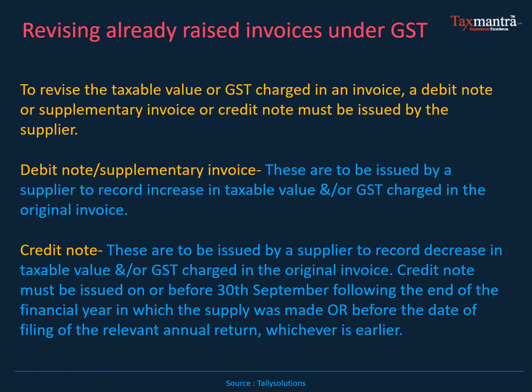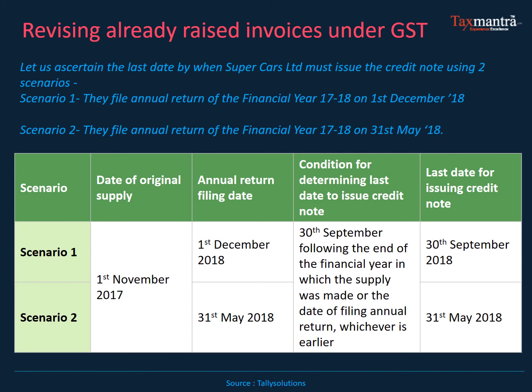The credit note deadline is before 30th September or before the date of filing of the relevant annual return, whichever is earlier. For example, in scenario one, if the annual return for financial year 2017-18 is filed on 1st December 2018, then 30th September is the earlier date by which you need to raise the credit note. In scenario two, where the annual filing date is 31st May, you need to raise it by 31st May.